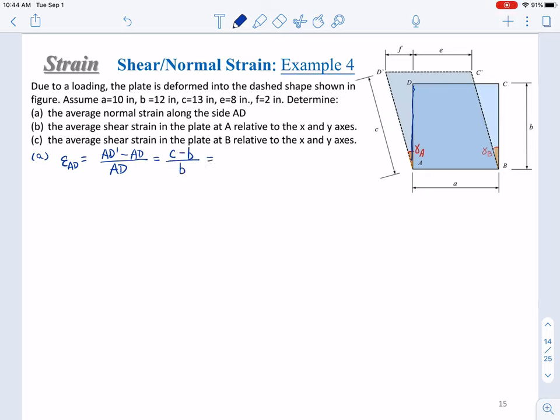The C here is 13. B is 12 over 12. Okay, then we get 0.0833 strain. So that's it. That is how we calculate the normal strain.